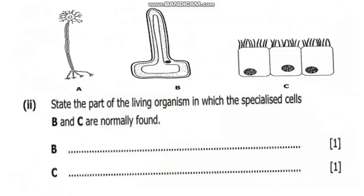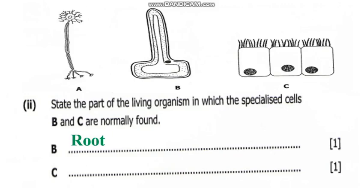We now move on to question A2: state the part of the living organism in which the specialized cells B and C are normally found. The specialized cell B is the root cell, and cell C is the ciliated cells. The root cells are found in the root. The ciliated cells are found in the human respiratory tract — that is in the trachea and the bronchi. They can also be found in the reproductive system, in the fallopian tube, oviduct, or uterus. We pick the trachea as our answer.